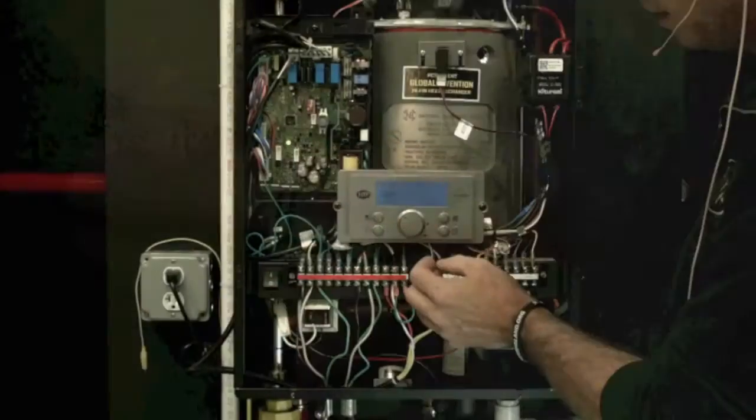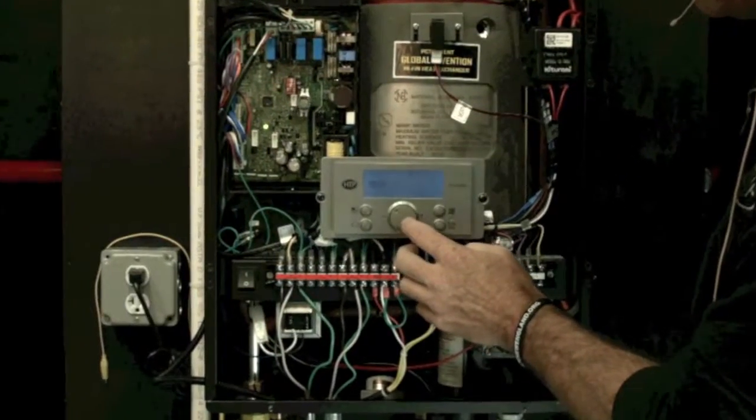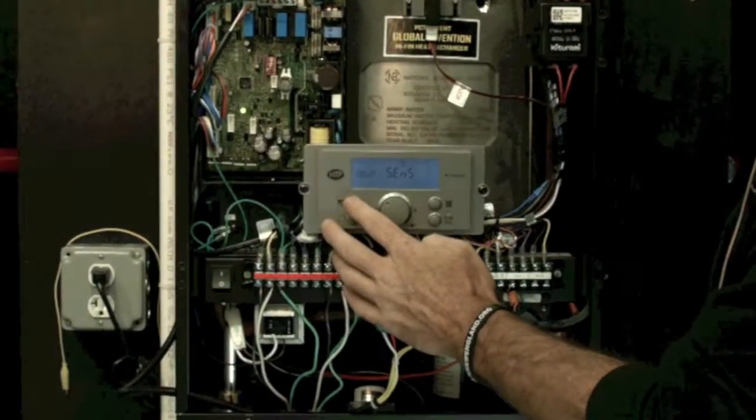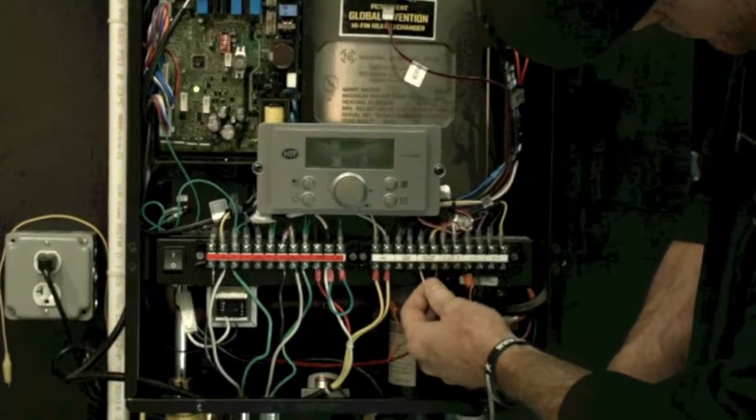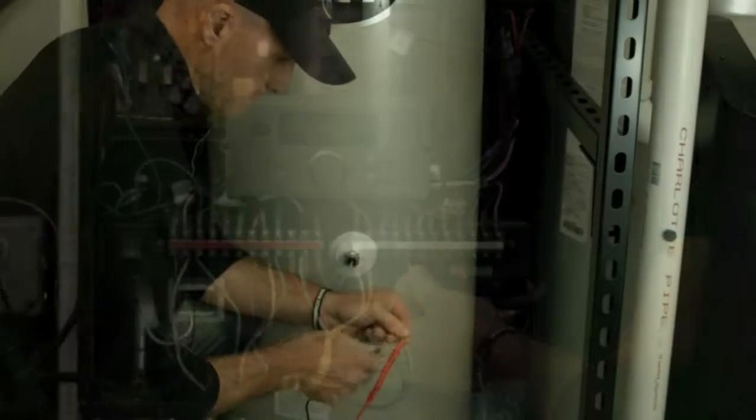If sensor is selected in installer parameter 39, then ensure proper wiring connections to the low voltage terminal strip. If wiring is correct, then resistance must be verified using an appropriate meter.